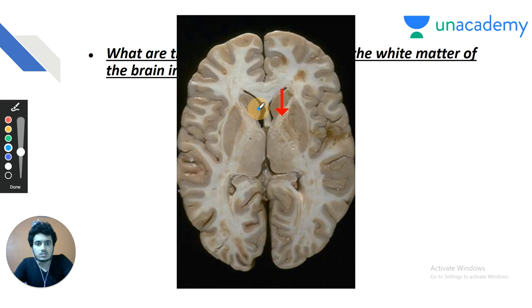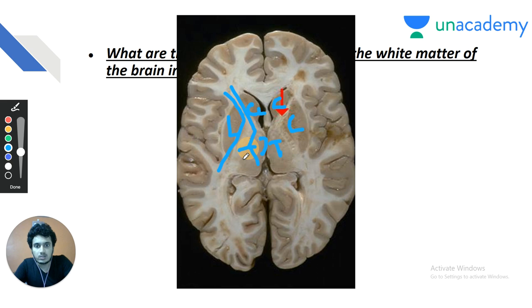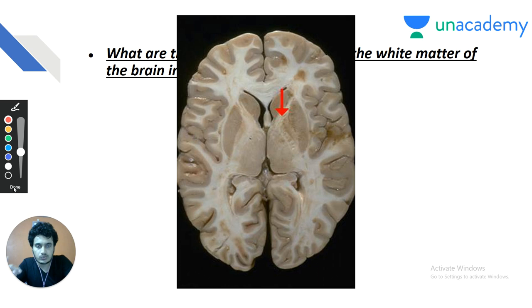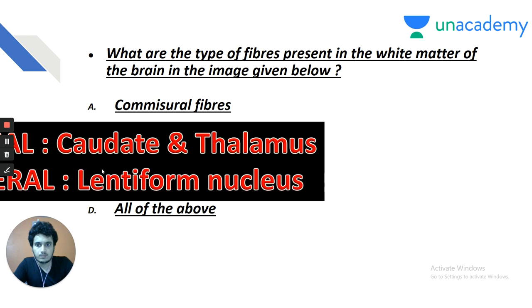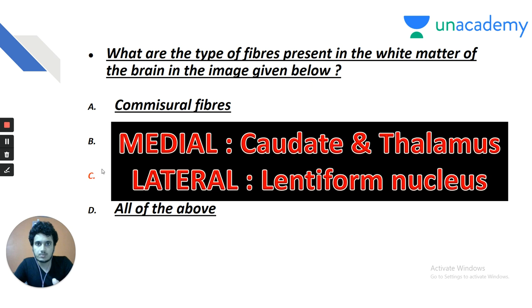In the image: lateral ventricle is visible, just lateral to it is the caudate nucleus; the third ventricle is also seen with thalamus lateral to it; further lateral is the lentiform nucleus. The internal capsule is bounded medially by the caudate nucleus and thalamus, and laterally by the lentiform nucleus. The internal capsule is a must-question in any central institute exam — know its boundaries, constituents, and parts.